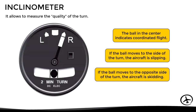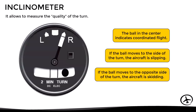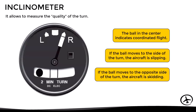For example, if the instrument indicates a turn to the right and the ball remains in the center, the aircraft is making a coordinated turn to the right. If the ball moves to the right — the side of the turn — it indicates a slipping turn. If the ball moves to the left — the opposite side of the turn — it indicates a skidding turn to the right.